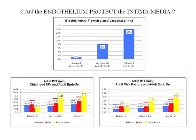You measure endothelial function and stratify these 40-year-olds into deciles. Those in the lower 10% had impaired endothelial function, vasodilating only 1%. In the top 10%, considered to have enhanced endothelial function, they vasodilated 16%. The remaining 80% had intermediate endothelial function. Now, looking at adult intermediate thickness in relation to childhood risk factors and adult endothelial function: individuals who as adults had enhanced endothelial function and vasodilated well — it didn't matter whether they had none, 1, or 2 or more risk factors as kids.